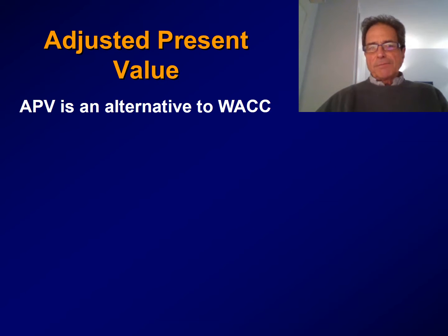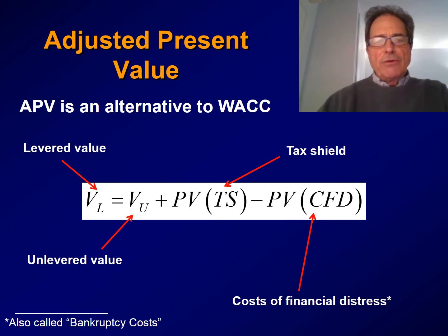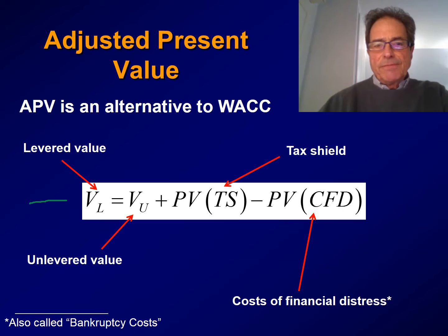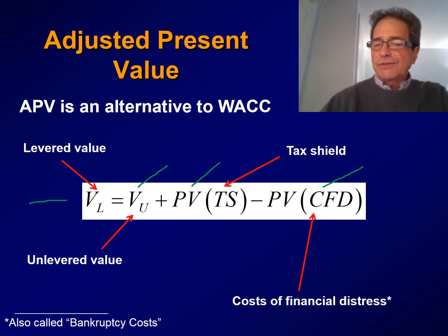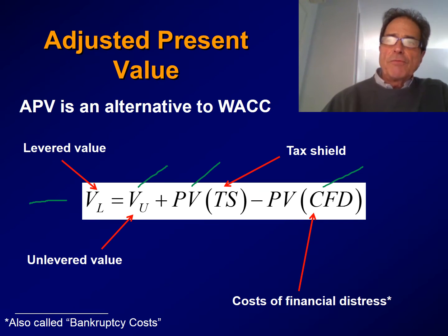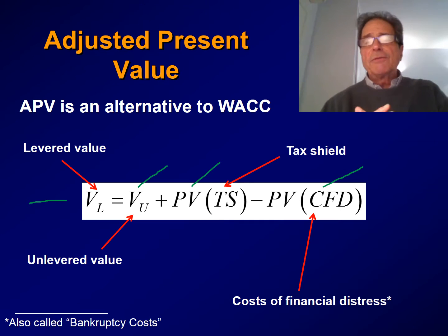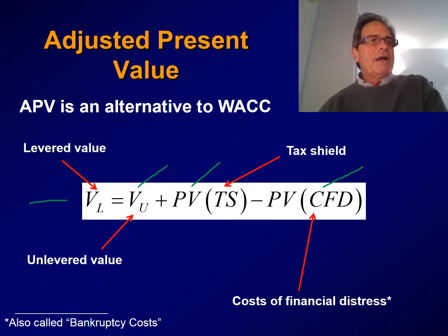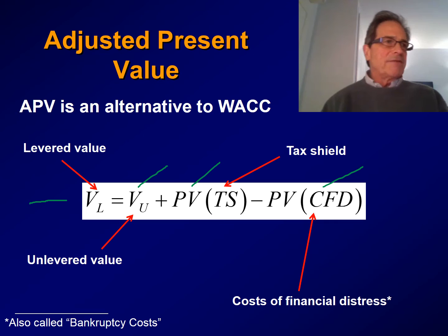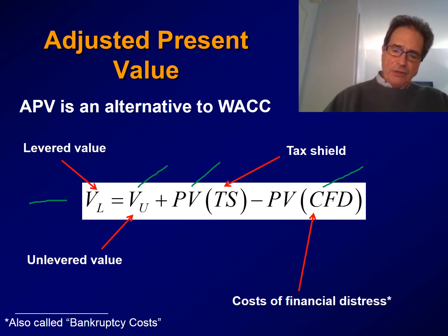Let's introduce adjusted present value. The adjusted present value formula is the one we see here. The value of the levered firm is equal to the value of the unlevered firm plus the present value of the tax shield minus the present value of the cost of financial distress. So when we want to compute the value of the levered firm, we first compute the value of the firm assuming it has no debt. Then, apart, we calculate the present value of the tax shield, and apart, we calculate the present value of the cost of financial distress, and then we add them up together to get the value of the levered firm.